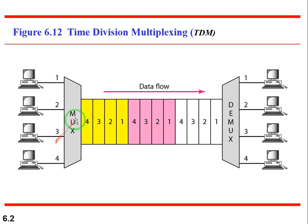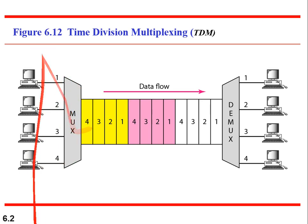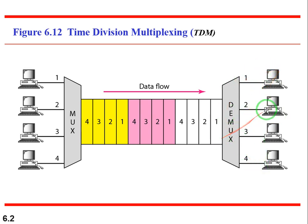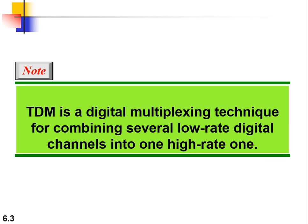The job of the multiplexer is to combine all data from four digital channels into one single channel. The data from all four channels is transferred via one high-rate channel. On the DMUX side, the demultiplexer removes the time slot concept and separates the data back: one goes here, two here, three here, four here. MUX adds; DMUX subtracts.